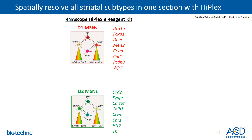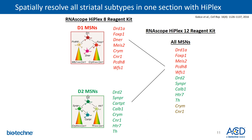What was really interesting and somewhat challenging is that to fully characterize all D1 and D2 MSNs, these cell types were marked by eight genes each — D1 cell types shown in red and D2 MSNs shown in green on the screen. To detect all D1 or all D2 MSNs, we really needed an assay that could target at least eight genes in the same tissue section. For that, we took advantage of the RNAscope HyPlex-8 Reagent Kit. Furthermore, if we could look at 12 markers simultaneously, we would be able to capture all D1 and D2 MSNs in the same section, so we also used the RNAscope HyPlex-12 Reagent Kit.